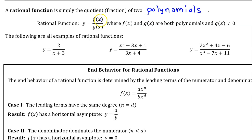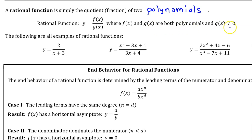A rational function is simply the quotient of two polynomials — a polynomial divided by another polynomial. It can be written as f over g, where f and g are both polynomials, and of course g cannot equal zero; you can't divide by zero.